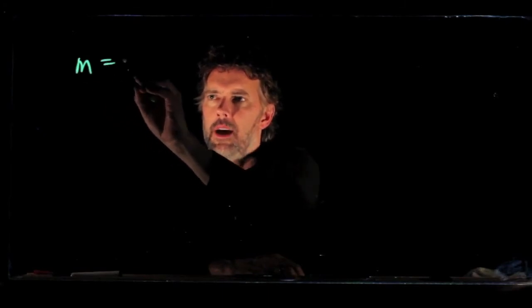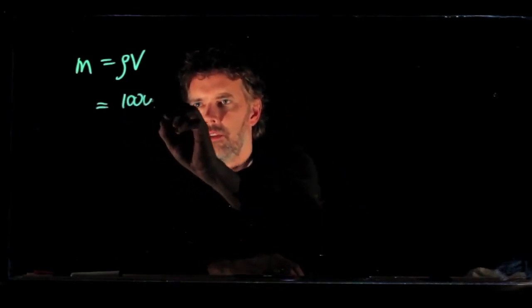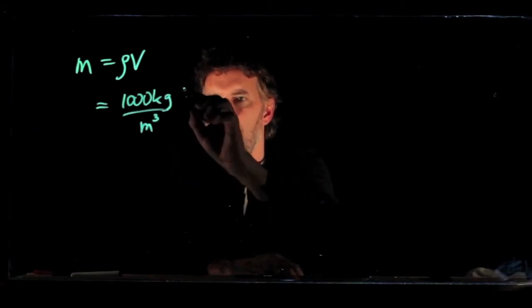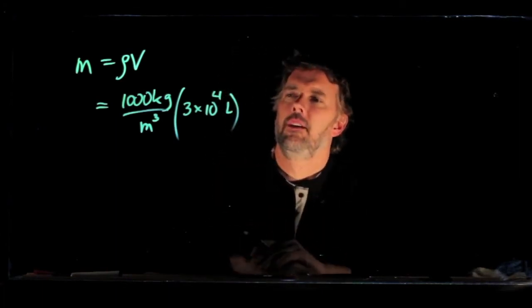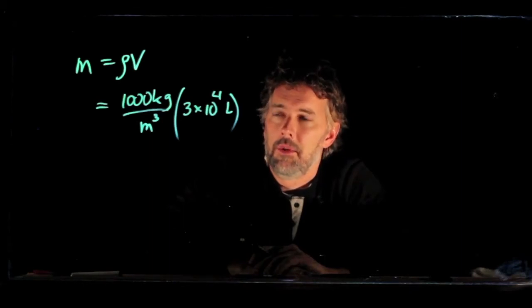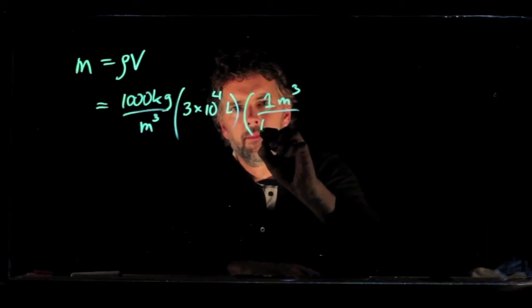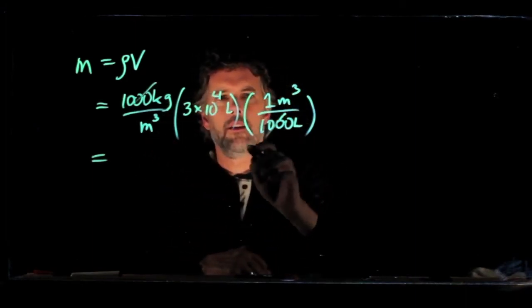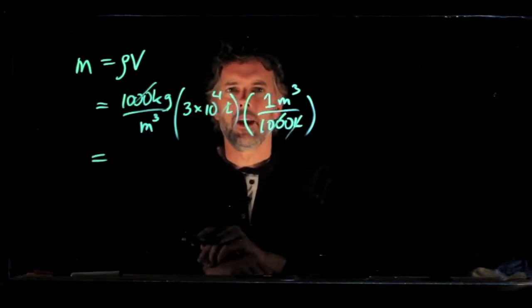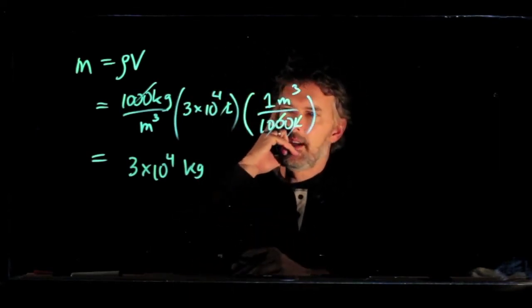We need to calculate the mass of the water that's in that aquarium. And what we remember is mass is equal to rho times volume. Now the density of water, we know it's 1000 kilograms per cubic meter. The volume of the water in the tank, we told you it's 3 times 10 to the 4 liters. But we don't know how many liters are in a cubic meter, or maybe we do. Turns out there is 1000 liters in one cubic meter. So now we can simplify this equation quite a bit. What do we get? The 1000 drops out right there. We get the liters to cancel out, and we end up with 3 times 10 to the 4 kilograms.